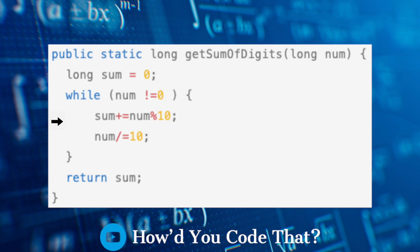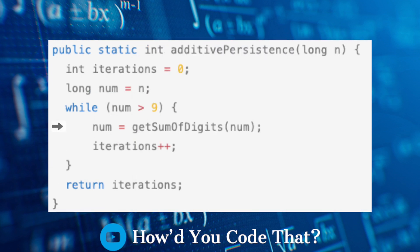Next, the number is divided by 10, which reduces it by a digit. The loop completes when all the digits of our number have been summed. The final result is returned to the calling method. The result from the call to getSumOfDigits is assigned to the num variable.